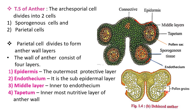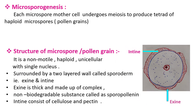The layers like epidermis, endothecium, and inner layers play an important role in the breaking of the anther wall, and the pollen grains are set free. Later, these pollen grains are transported to the surface of the stigma by different agents, and this process is called pollination. Now we will see the process of microsporogenesis, in which pollen grains are produced. Microsporogenesis is a process in which each microspore mother cell undergoes meiosis to produce a tetrad of four haploid microspores, also called pollen grains.